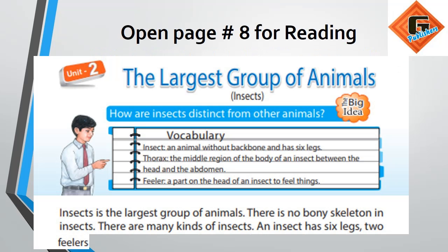Unit 2: The Largest Group of Animals, Insects. Big Idea: How are insects distinct from other animals? Vocabulary — first word is Insects: an animal without a backbone that has six legs.